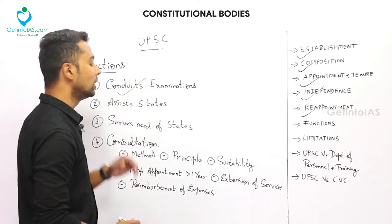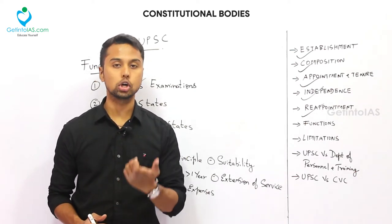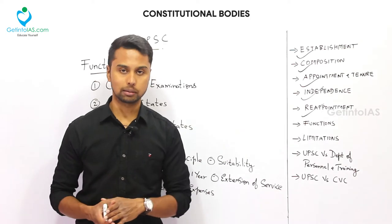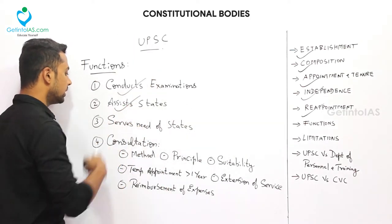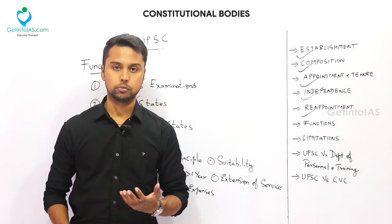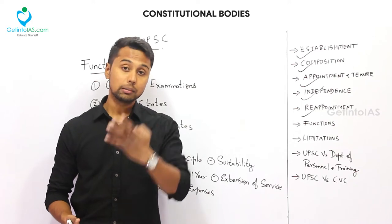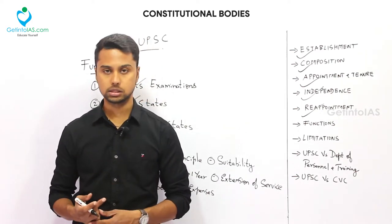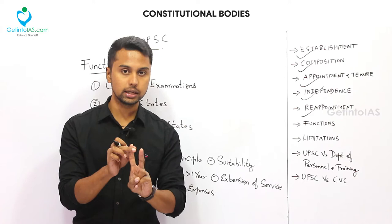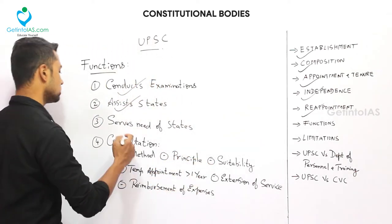The next important function is to assist the state for joint recruitment. When there is a joint recruitment, UPSC will assist the State Public Service Commission concerned. The third function is serving the needs of the state: if the state Governor requests UPSC for any help — for conducting an examination or any other matter — then with the permission of the President, UPSC will help. A request by the Governor and approval of the President are both necessary.